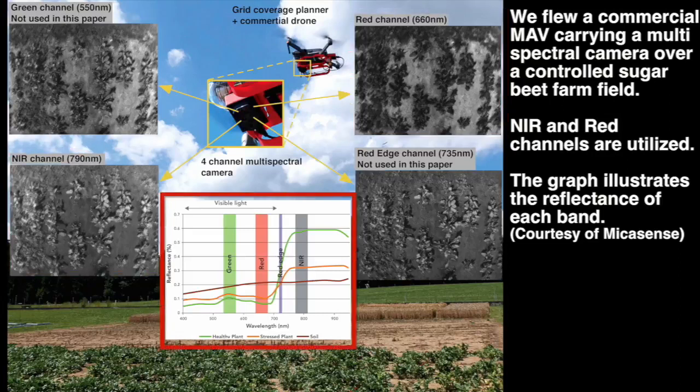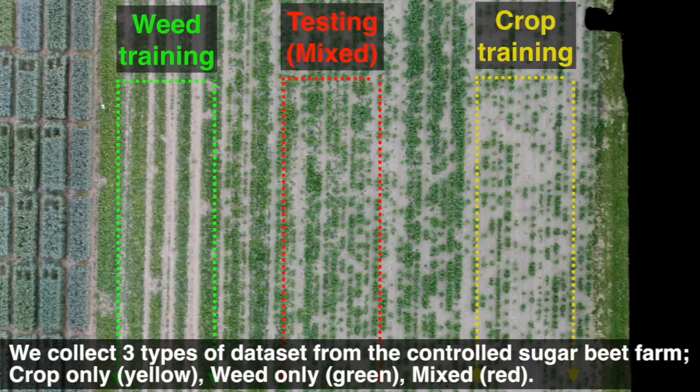The graph illustrates the reflectance of each band for healthy and sick plants and soil. We collect three types of data sets from the controlled sugar beet farm: crop only in yellow, weed only in green, and mixed in red color.